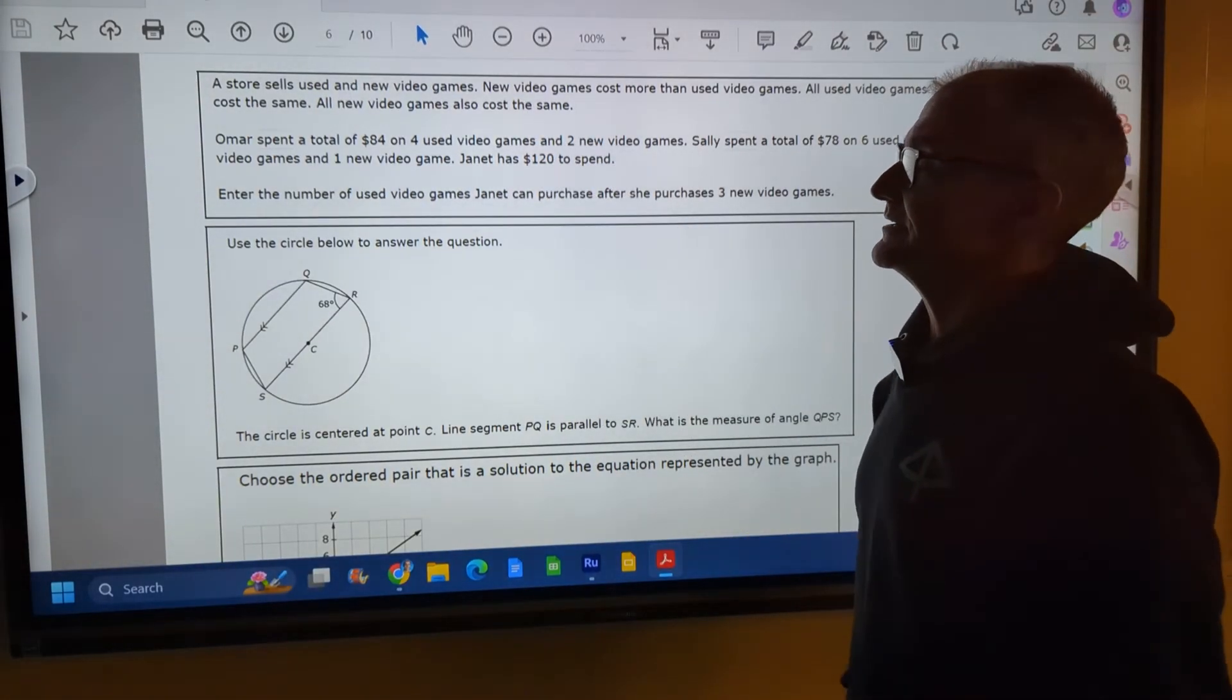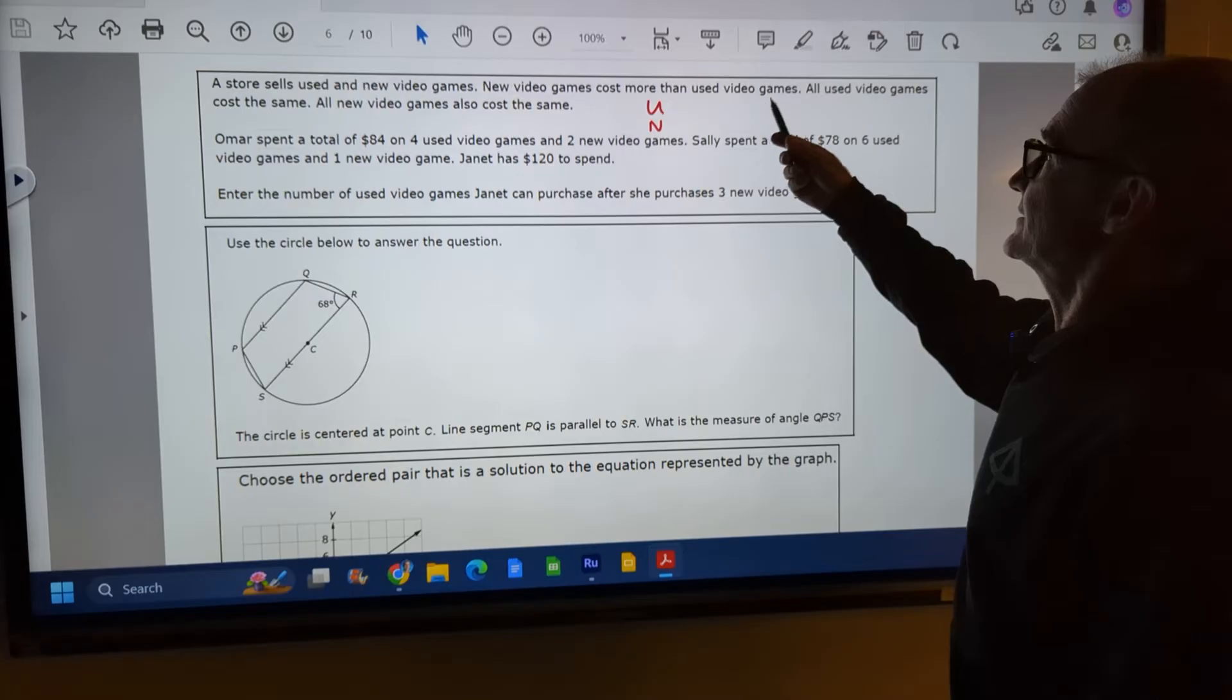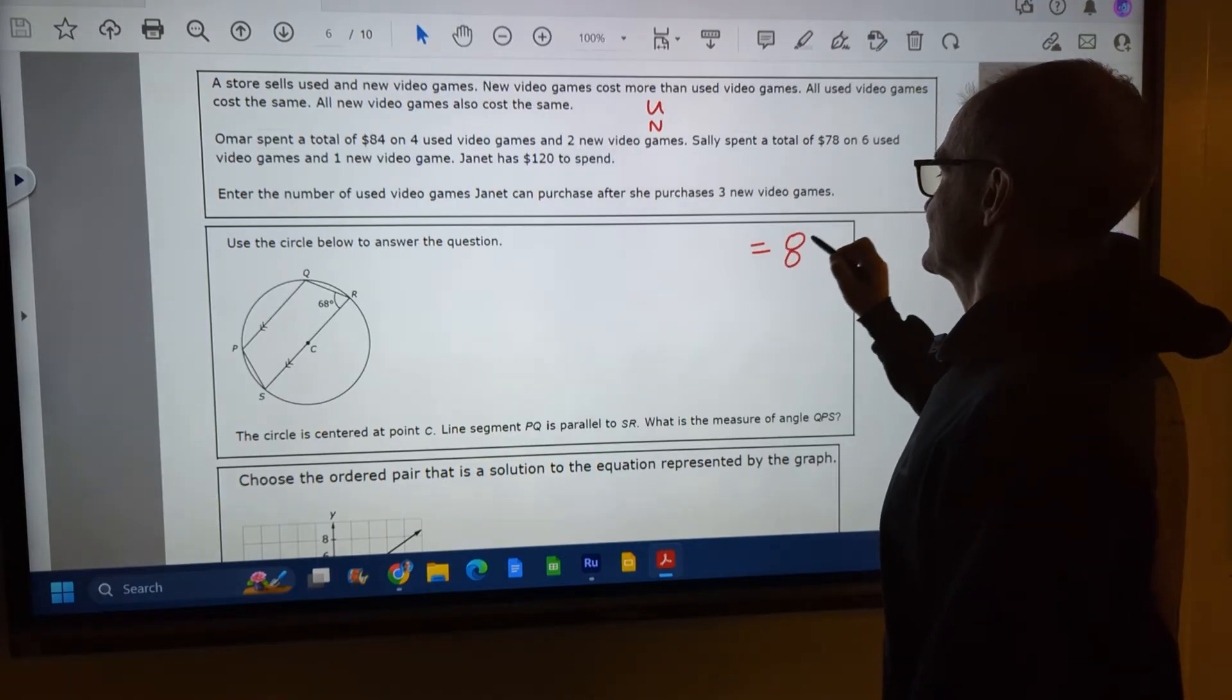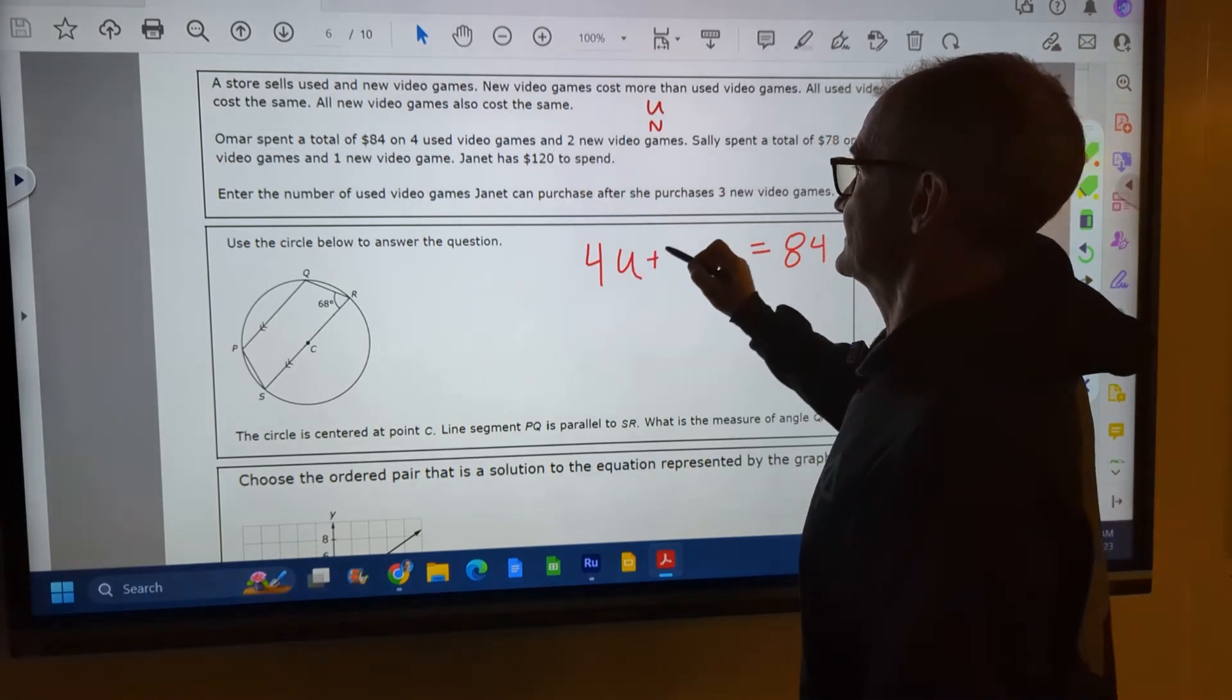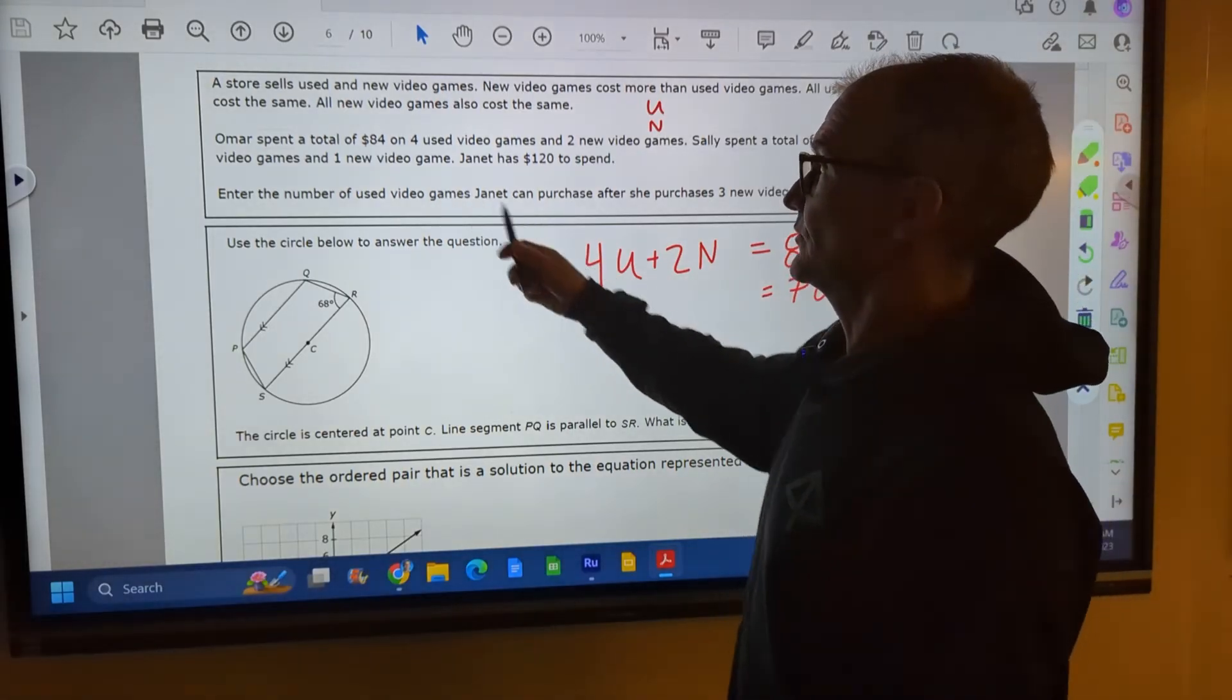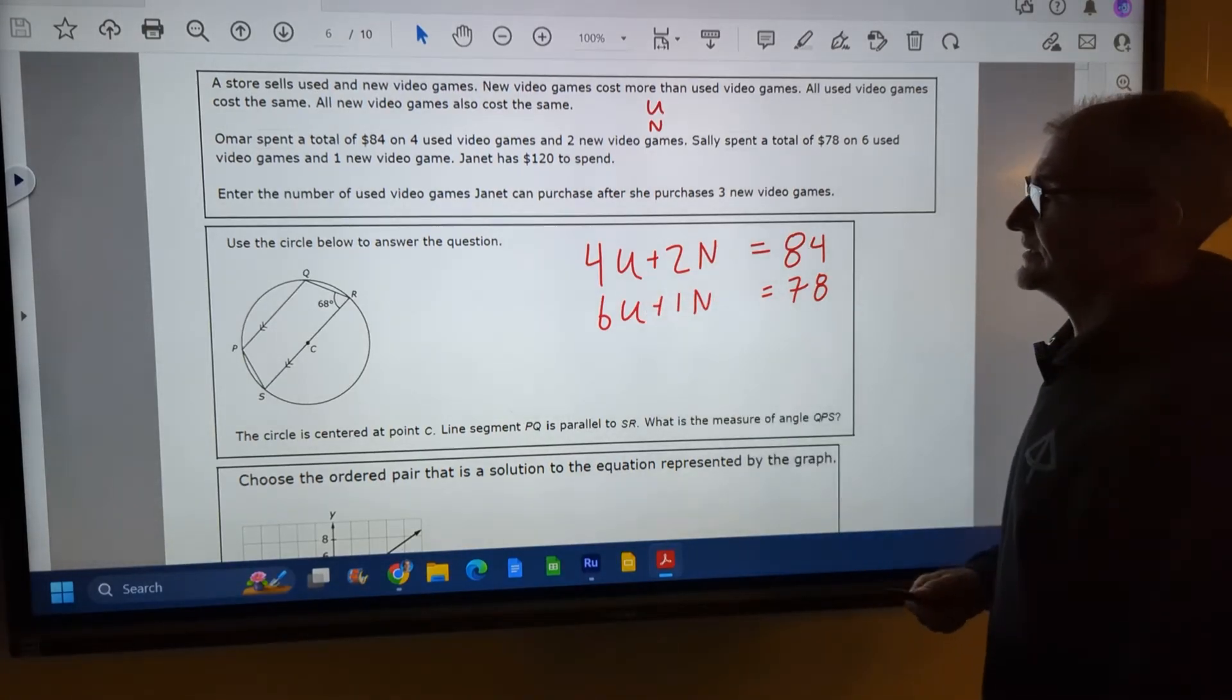All right, let's take a look at this word problem right here. It's kind of a long, complex problem. Store sells used and new video games. So I'm going to call that U and N. New video games cost more than used video games. Well, there's a surprise. All used video games cost the same. All new video games cost the same. So a couple disclaimers there. Omar spent a total of eighty-four dollars on four used video games and two new video games. Sally spent a total of seventy-eight dollars on six used video games and one new video game. Well, now I've got two equations, two variables I could solve right there.